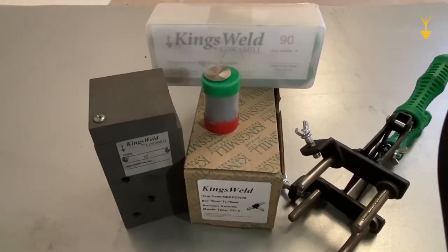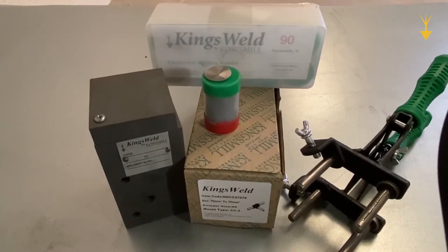King's weld exothermic welding molds and weld metals are an integral part of an earthing system. As a reminder, a proper earthing system should have a low resistivity path to earth with the capacity to carry high currents and should be made from materials that have excellent corrosion resistance and strong mechanical strength. The King's weld exothermic line fits right in with those requirements.